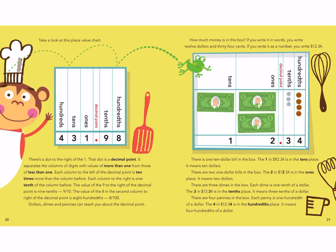Take a look at this place value chart. There's a dot to the right of the 1 — the dot is a decimal point. It separates the columns of digits with values of more than 1 from those of less than 1. To the left is more than 1; to the right is less than 1. Each column to the left of the decimal point is 10 times more than the column before. Each column to the right is one-tenth of the column before. The value of the 9 to the right of the decimal point is 9 tenths, or written as a fraction, 9 over 10. The value of the 8 in the second column to the right is 8 hundredths, or 8 over 100.